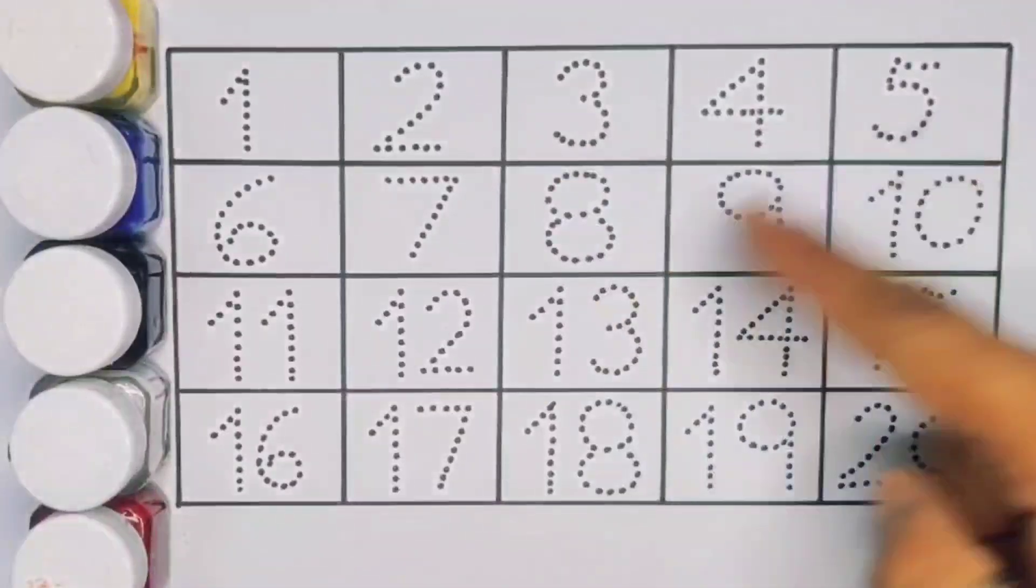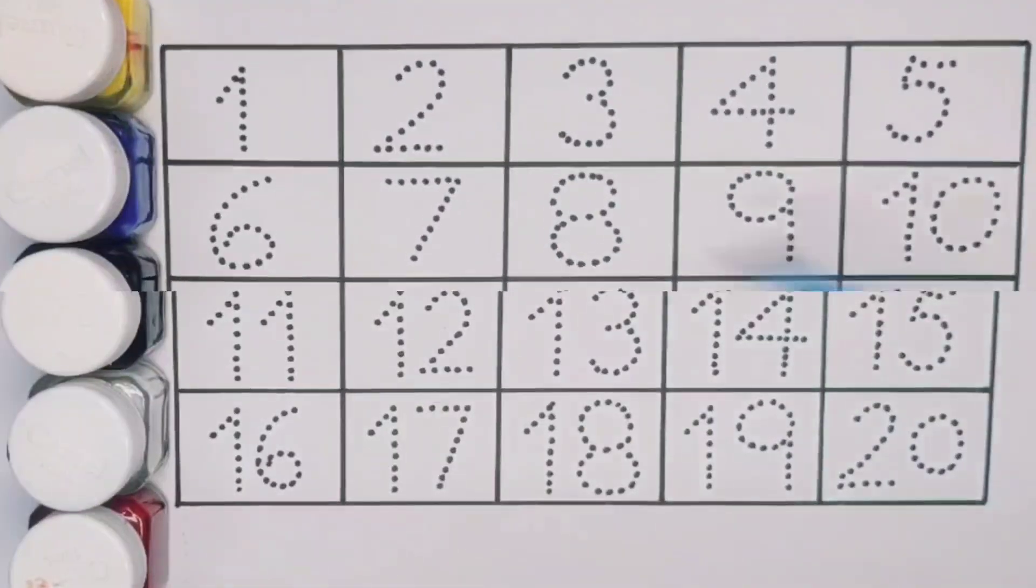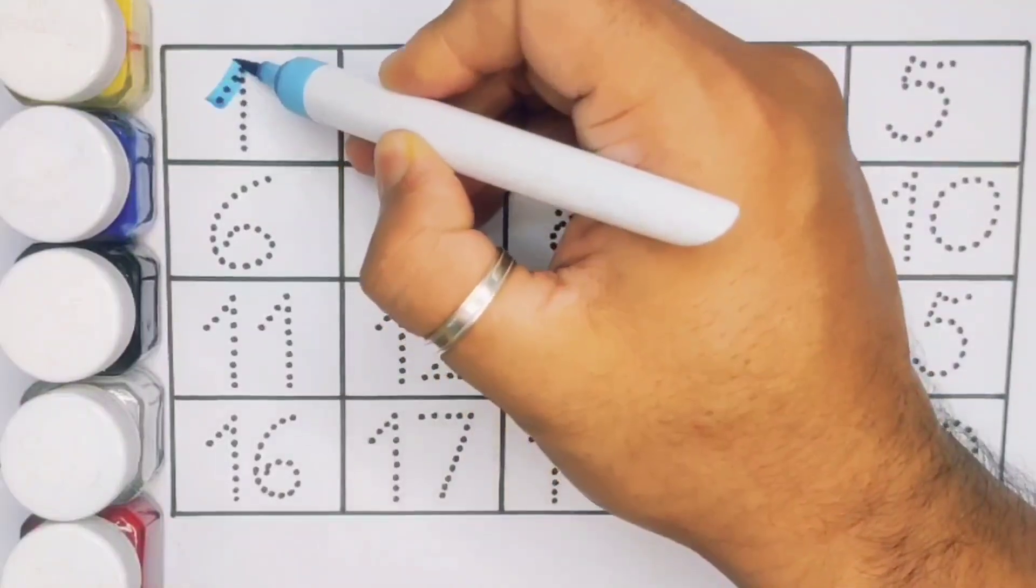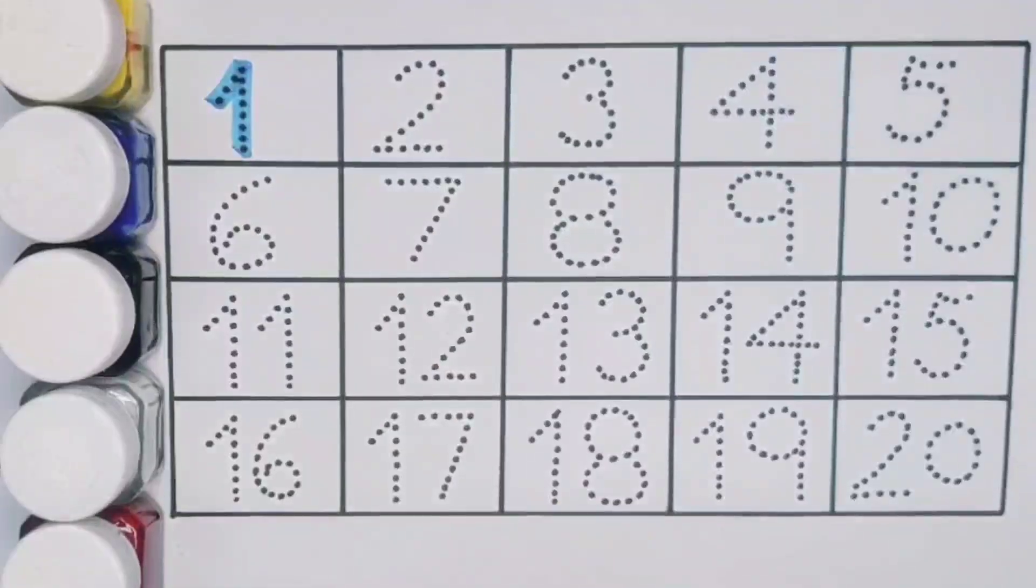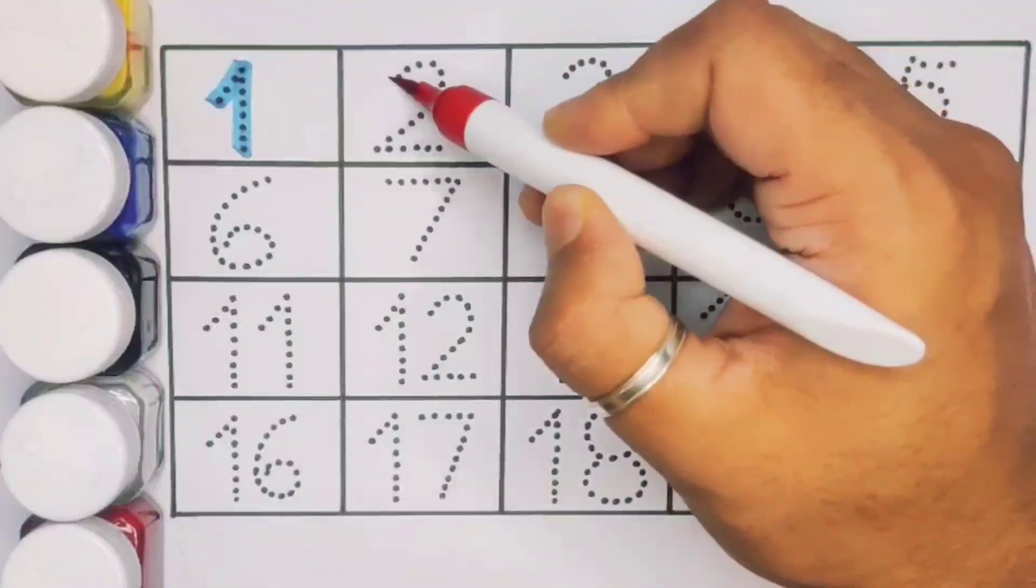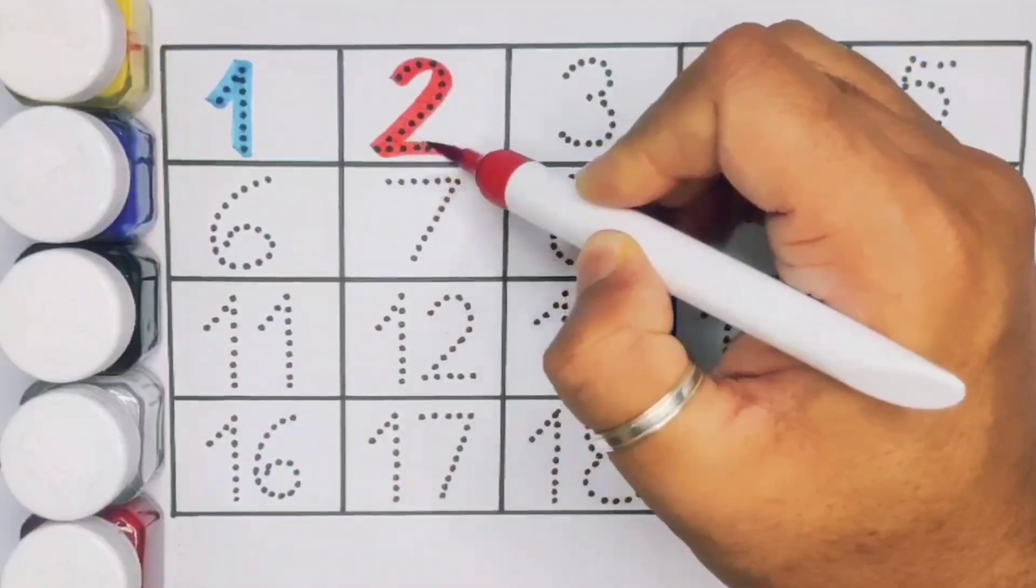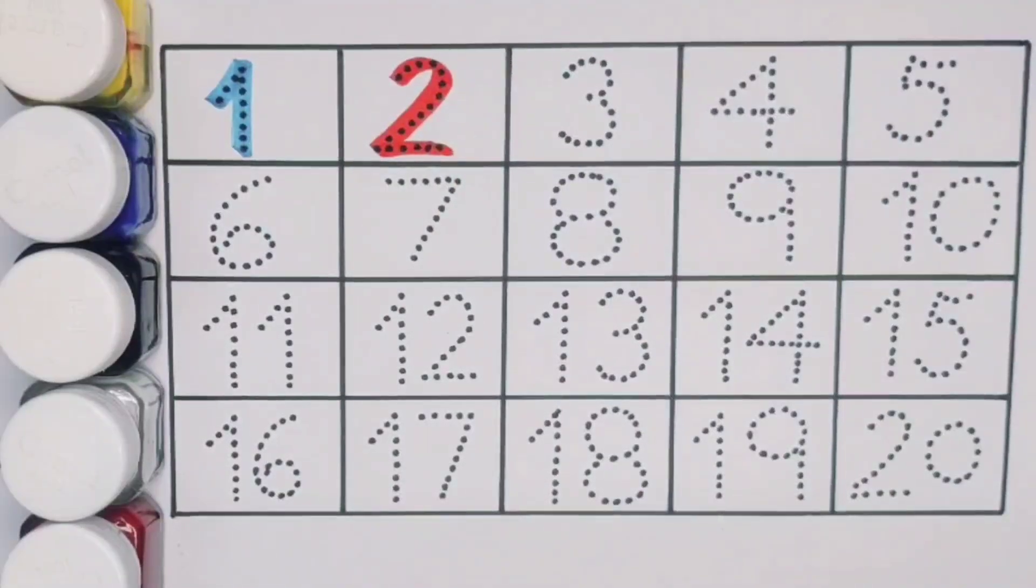Now let's learn the numbers counting 1 to 20. First 1, number 1. Next kids 2, number 2. Next kids 3, number 3.